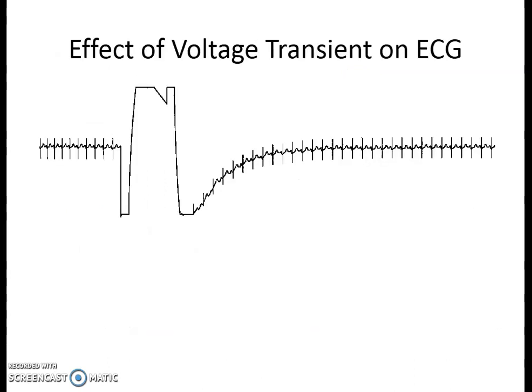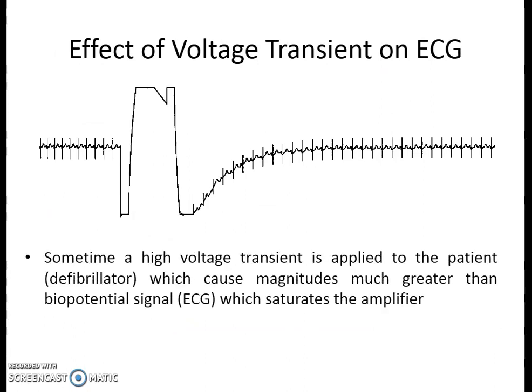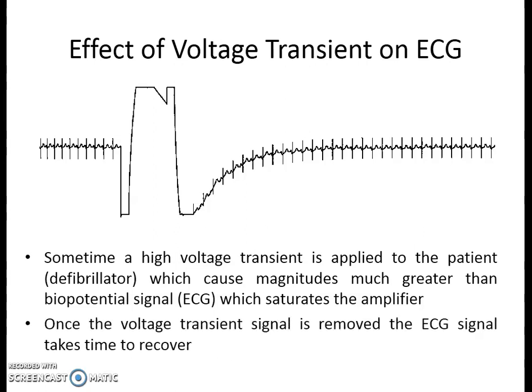This is one of the effects of a voltage transient on the ECG machine. Sometimes a high voltage transient is applied to the patient — such as from a defibrillator — which causes a magnitude much greater than the biopotential signal, and this saturates the amplifier. Once the voltage transient signal is removed, the ECG signal takes time to recover. This is the same thing you can see in the diagram: this is the current transient and this is the time of recovery.